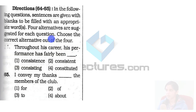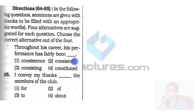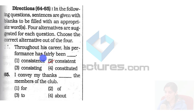In the following question, sentences are given with blanks to be filled with an appropriate word. We have to select the correct alternative. 'Throughout his career his performance has fairly been consistent.' Consistent is an adjective meaning happening in the same way over a period of time. Consistence is not an adjective — it is a process. So here we are going to use 'consistent.' Option two.